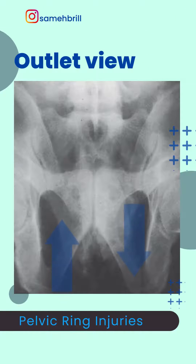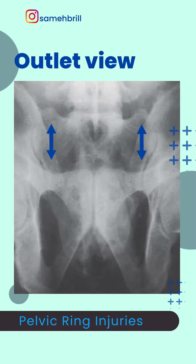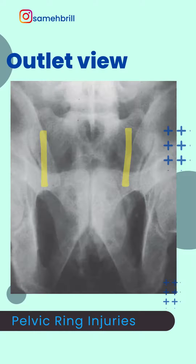As for the outlet view, it's ideal for visualizing vertical displacement of the pelvis. It also helps to better evaluate the sacroiliac joints, non-displaced fractures of the sacrum or sacral foramen, and destruction.